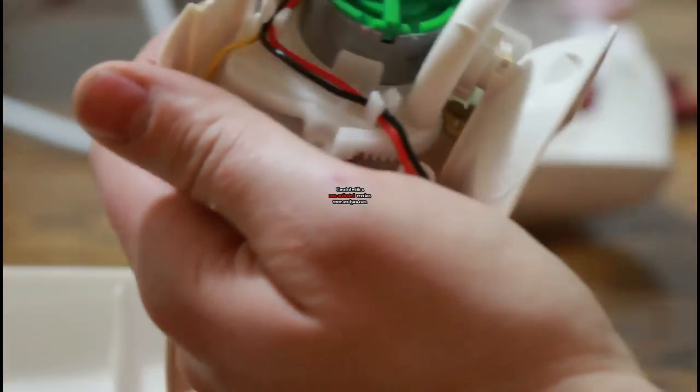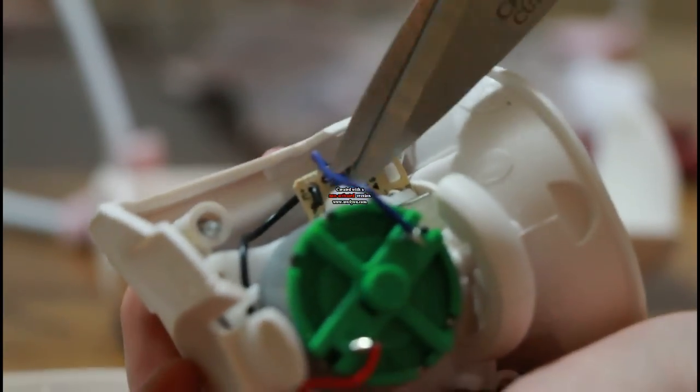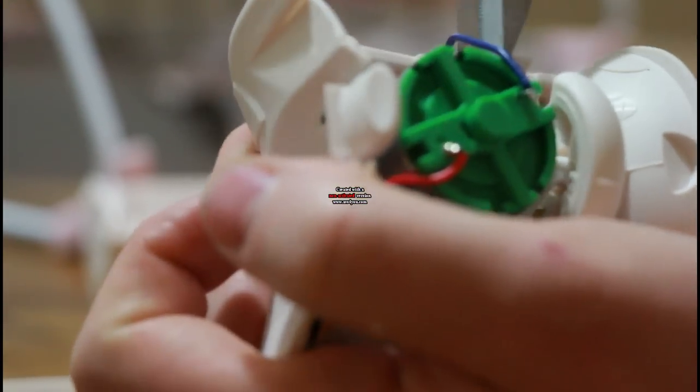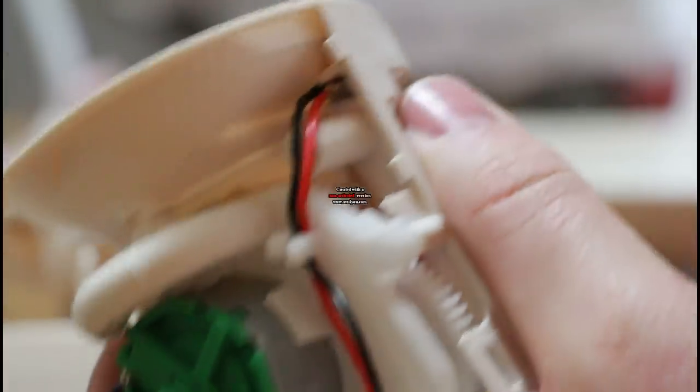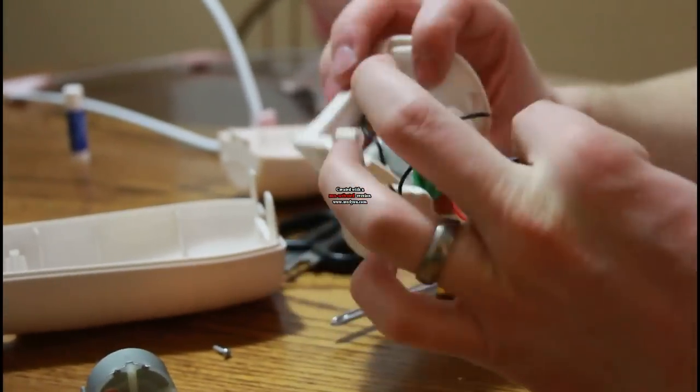Now we're just going to snip these wires. Let's snip the blue one off of here. You should be able to just kind of pull that through. And then the red one is going over to that battery lead. So we'll just snip that one also.